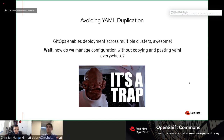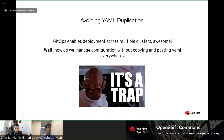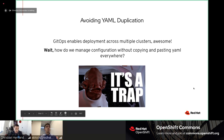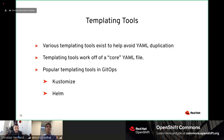One of the issues and challenges that comes with GitOps is avoiding YAML duplication. I can deploy across multiple environments, but how do I manage this without having ten versions of the same YAML for ten environments? That's where templating tools come in — you take a core YAML file and templatize it, with one core and just a few things changing. The popular templating tools are Kustomize and Helm.